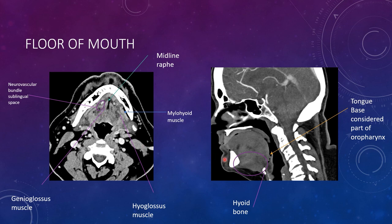Here it is on the sagittal view — just think from bone to bone. Here's the anterior mandible, here's the hyoid bone, here's the floor of mouth. It has a mucosal surface underneath the tongue and also the floor of mouth musculature. The tongue base, which is posterior to the hyoid, is actually considered part of the oropharynx.